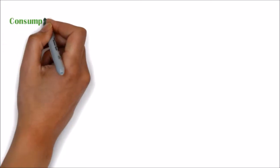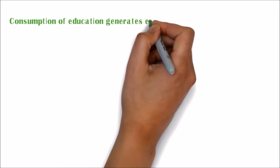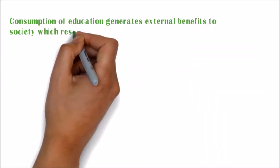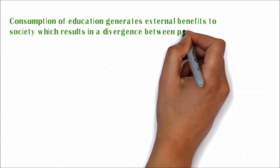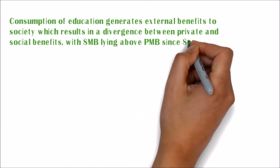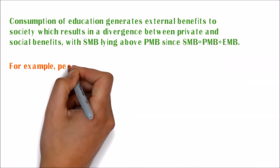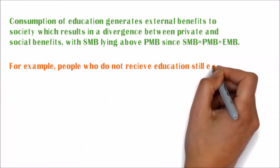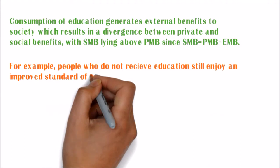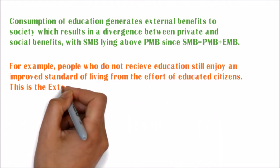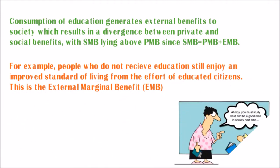Consumption of education generates external benefits to society, which results in a divergence between private and social benefits, with SMB lying above PMB since SMB equals PMB plus EMB. For example, people who do not receive education still enjoy an improved standard of living from the efforts of educated citizens. This is an external marginal benefit.